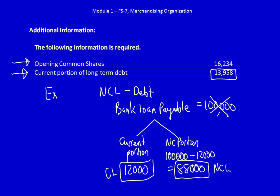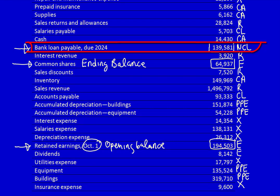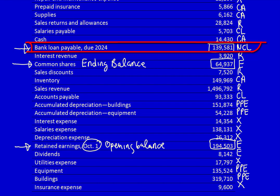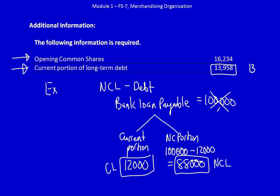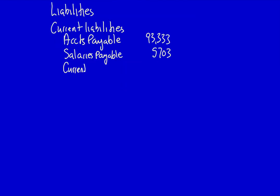So what is the actual amount of the bank loan? The bank loan payable due in 2024 is $139,581. That's the total, but we're going to have to split that between the current portion and the non-current portion. $139,581 subtract $13,958 gives us the long-term portion of $125,623. That is the non-current portion of the bank loan. The current portion of $13,958 goes under current liabilities — current portion of long-term debt: $13,958.